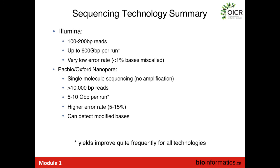To summarize sequencing technologies: Illumina has 100 to 200 base pair reads, up to over a terabase per run now, with very low error rate — predominantly substitutions. PacBio and Oxford Nanopore are single molecule sequencers which don't require amplification. They can sequence DNA reads longer than 10,000 bases, give around 5 to 10 gigabases per run, but have a higher error rate. Both technologies can also detect modified bases like 5-methylcytosine natively, without requiring things like bisulfite conversion.